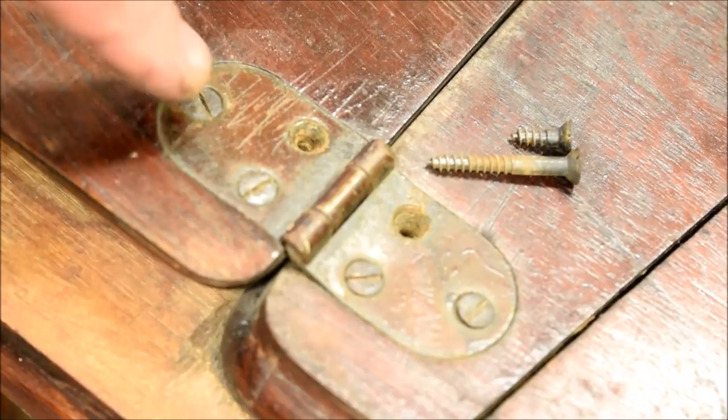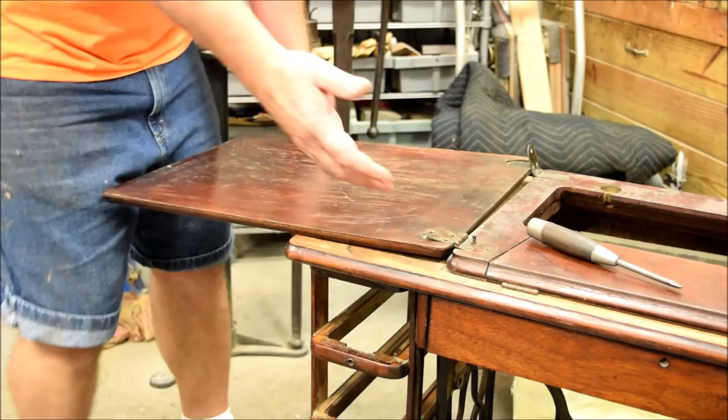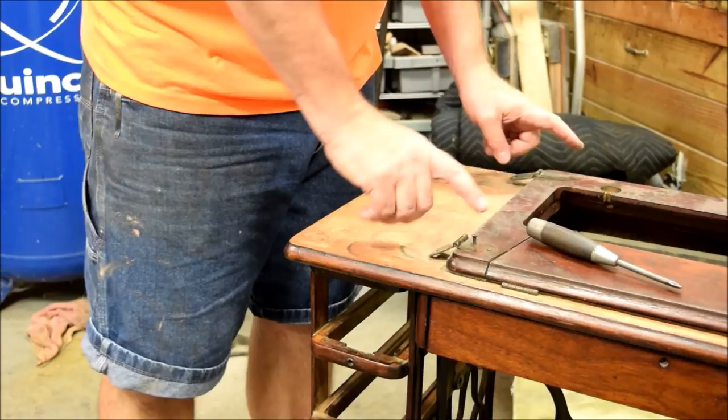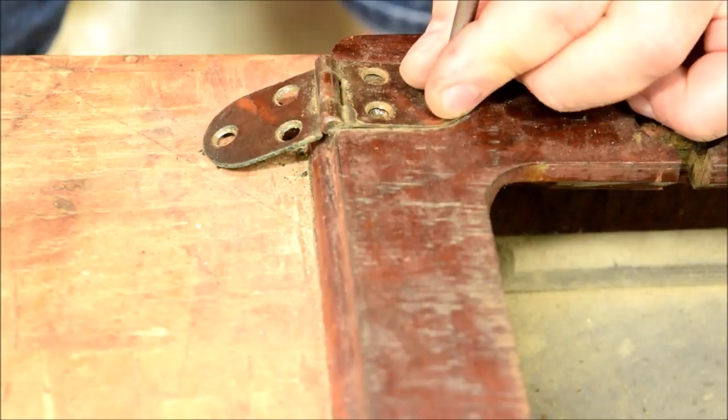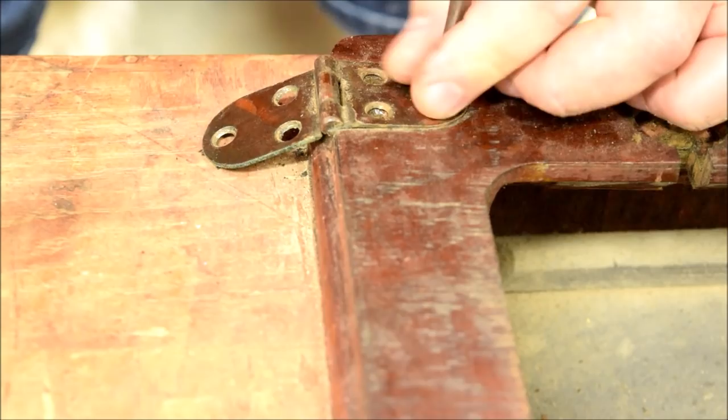And with the lid screws removed from the hinge, the lid comes right off. We'll set that aside. Now we'll take the six screws, or actually five, I got one out already. Five screws off of this. We'll put these in the bag and we'll continue to work forward.